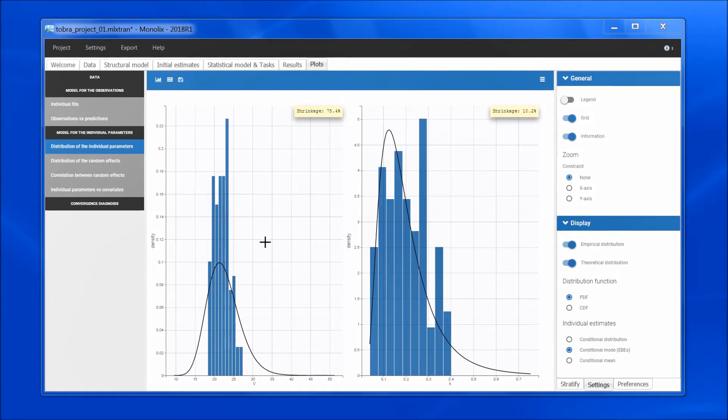For the volume, the EBEs have shrinked towards the center and do not properly reflect the variability within the population. And we see that accordingly, the shrinkage is high.